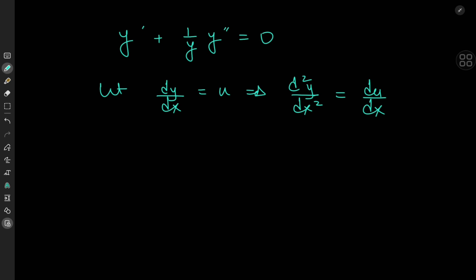But there's a way to get rid of that complication by just using the chain rule. So we have du by dx written as du by dy times dy by dx, and dy by dx is just our u variable.